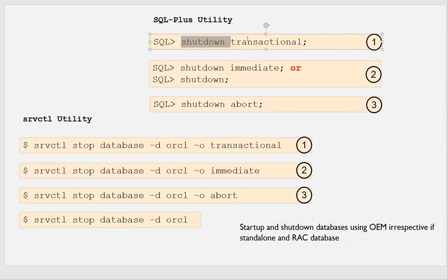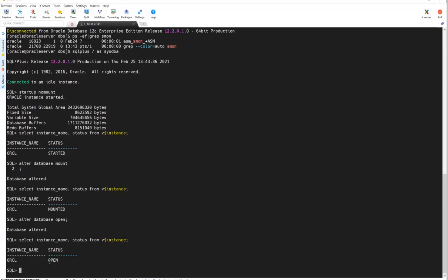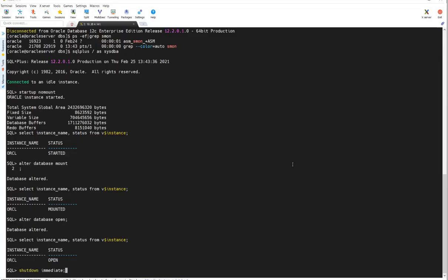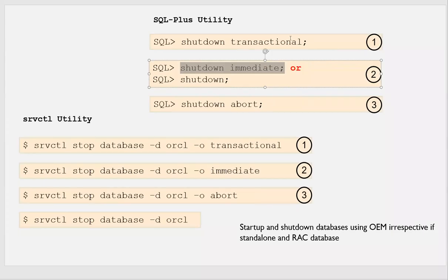Let's demonstrate shutdown transactional, immediate, normal, and abort. My database is open now. Shutdown immediate is the preferred one — all modes will achieve shutdown, but shutdown immediate is best recommended. Always use shutdown immediate. Don't use transactional, don't use normal, don't use abort. You can also use the SRVCTL utility or OEM to shut down your database.